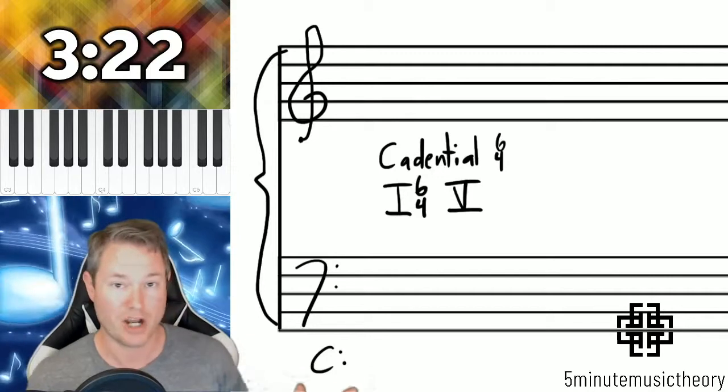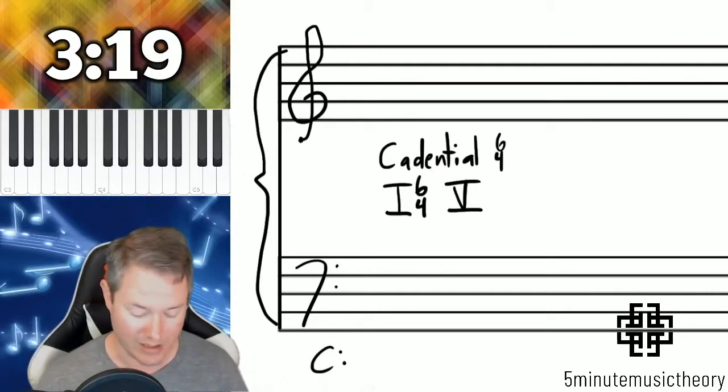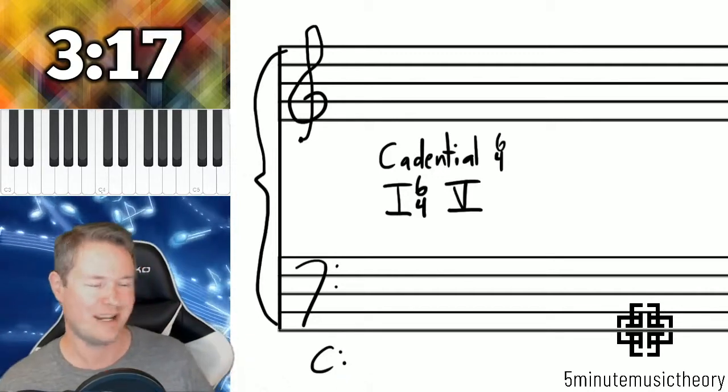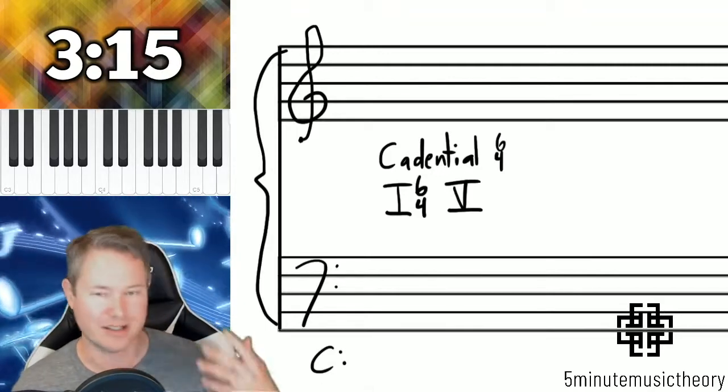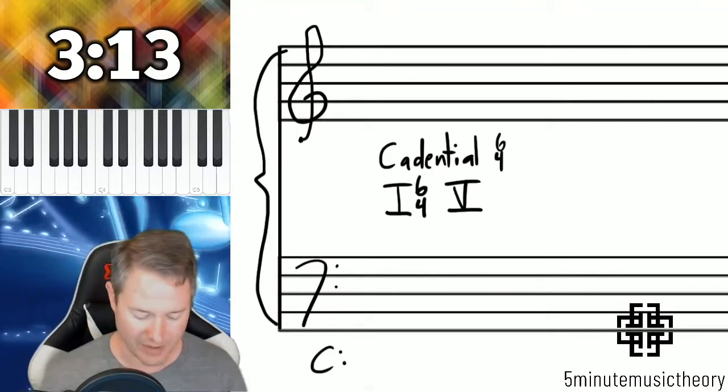So that's not tonic's job in any way. So this is a non-functional chord and the way that it's written right now doesn't really explain what's going on. It just says tonic 6-4 followed by dominant.